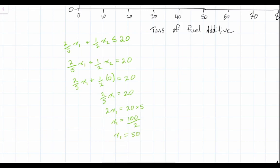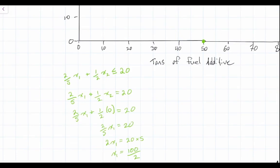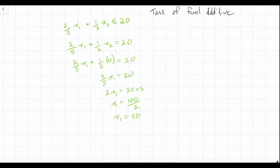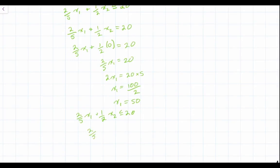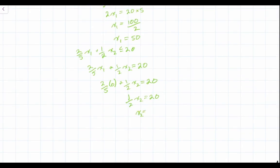This line for the first constraint intercepts the x1 axis at point 50, so we'll mark that on the graph. Now let's solve for x2. We set x1 equal to zero: two-fifths times zero plus one-half x2 equals 20, so one-half x2 equals 20, which means x2 equals 20 times two — so x2 equals 40.